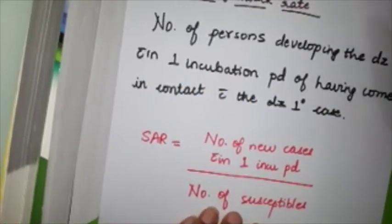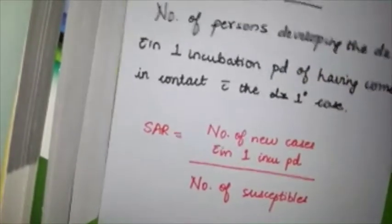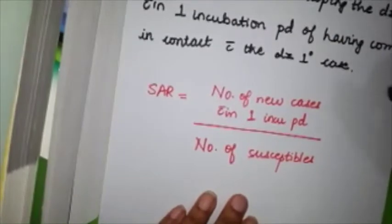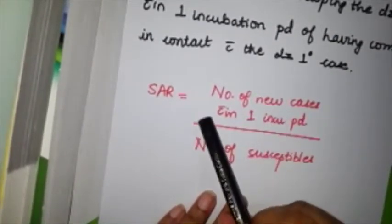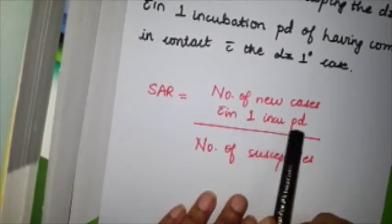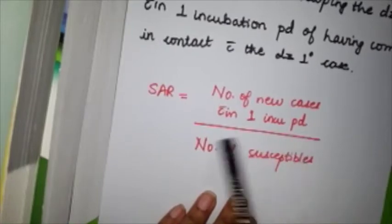Secondary attack rate is the number of persons developing the disease from the primary case within one incubation period. You write secondary attack rate with this formula: how many new cases have been developed from that primary case in one incubation period divided by number of susceptibles.